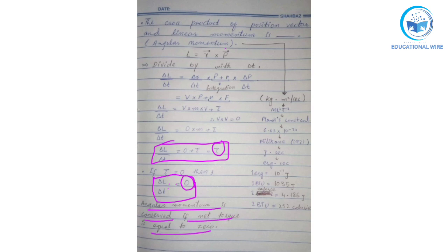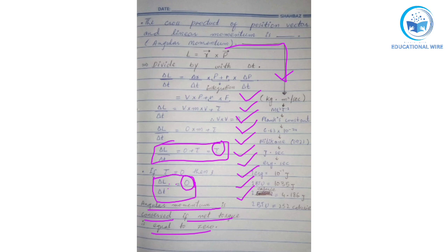Some key points about angular momentum: its SI unit is kilogram meter squared per second, and its dimension is ML²T⁻¹. Angular momentum has the same unit as Planck's constant, whose value is 6.63 × 10⁻³⁴ joule second. In CGS units, angular momentum is measured in erg second, where 1 erg = 10⁻⁷ joule second. In British units, 1 British thermal unit equals 252 calories, and 1 calorie equals 4.186 joules.